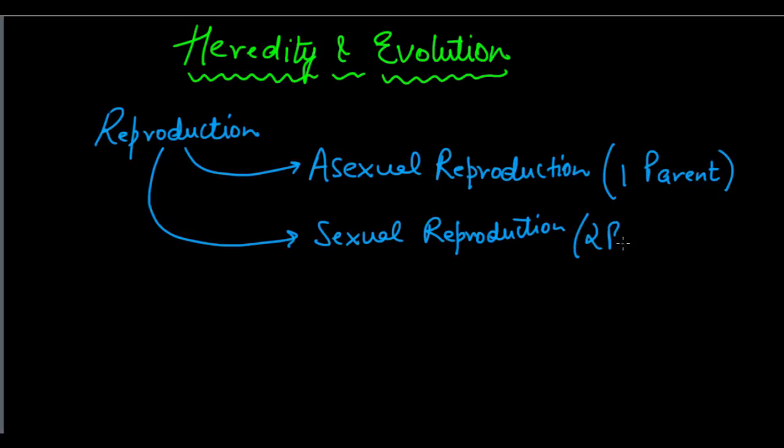In sexual reproduction, there are always two parents involved. These two parents come together, there is fusion of the gametes — that is, the sex cells or reproductive cells — and then there is zygote formation and so on. We looked at all of that.